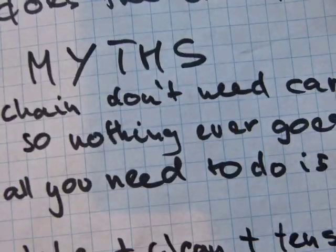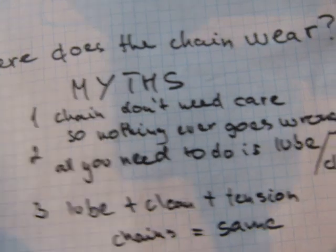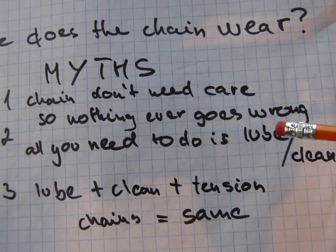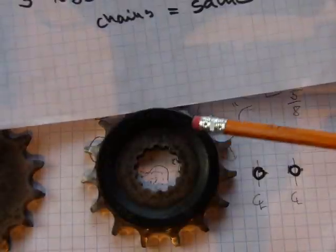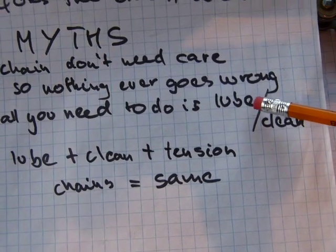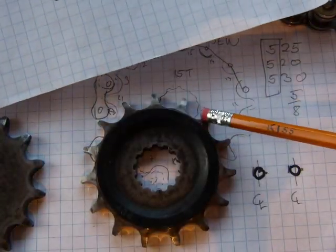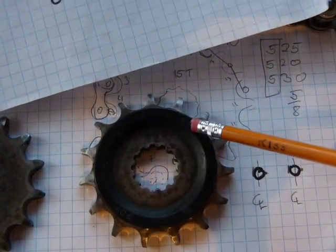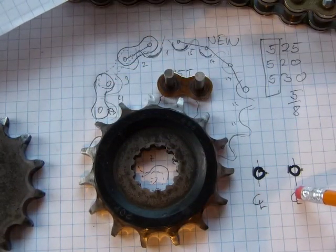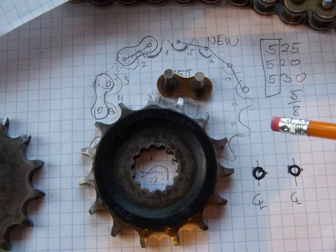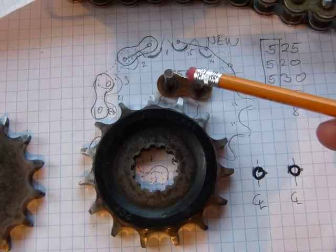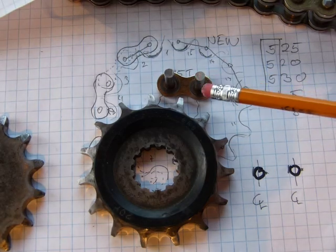Back to the myth page. Chains don't need care - incorrect. Nothing ever goes wrong - incorrect. This kind of dishing and wear is happening. All you need to do is lubrication and cleanup - incorrect. These changes don't get fixed with any kind of lubrication. As soon as the chain link is getting longer, no amount of lubrication is ever gonna fix or compensate for it.